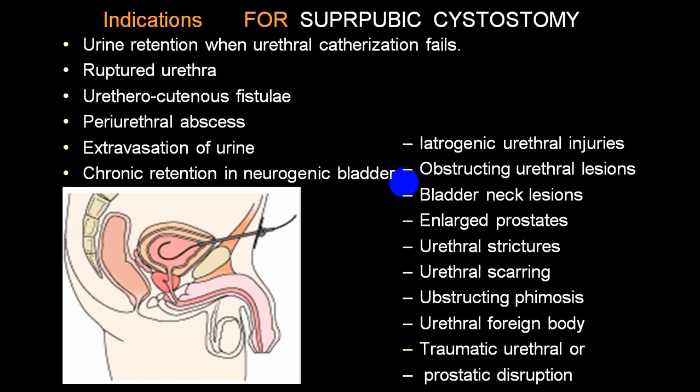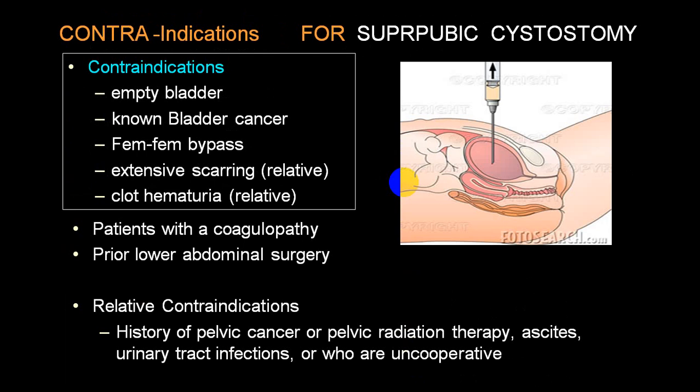Suprapubic cystostomy is commonly indicated when urethral catheterization has failed or is contraindicated due to urethral trauma, rupture urethra, fistula, periurethral abscess, extravasation of urine, chronic retention in neurogenic bladder, iatrogenic urethral injury, urethral strictures, bladder neck lesions, severe enlarged prostate, urethral scarring, obstructing phimosis, urethral foreign body, traumatic urethra, and prosthetic disruptions.